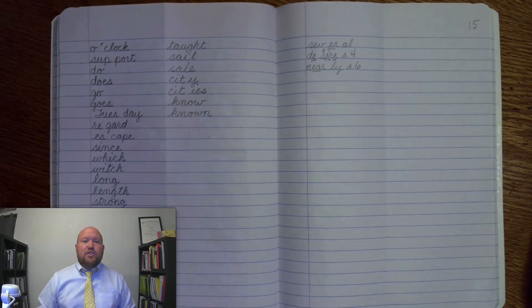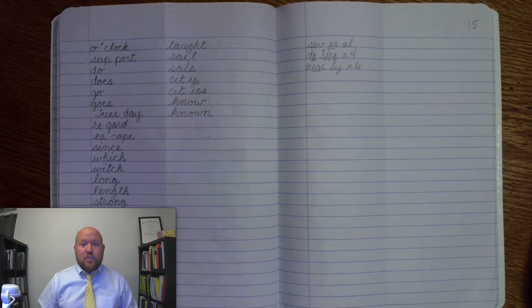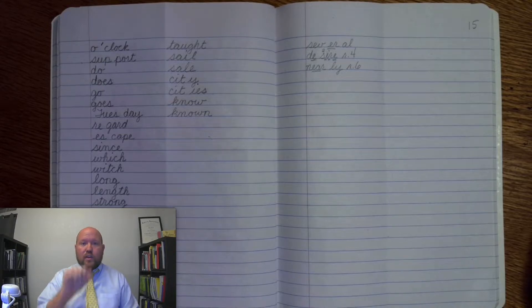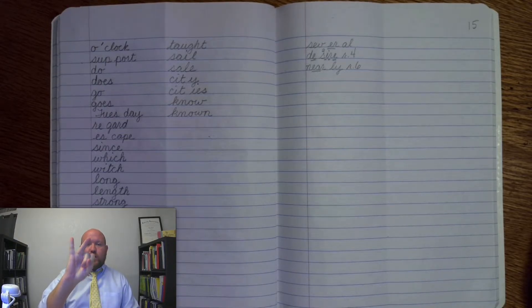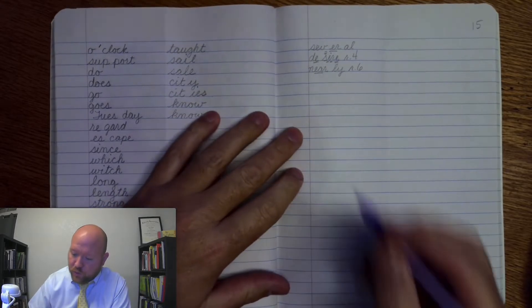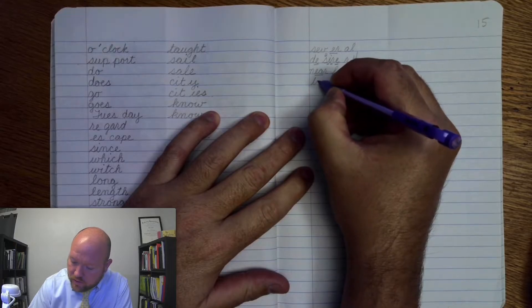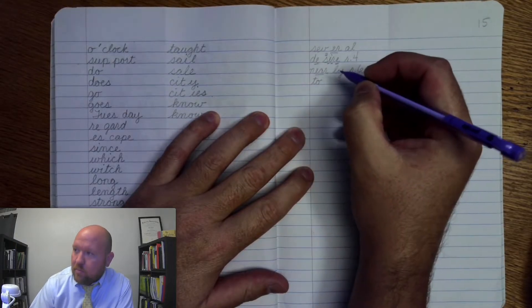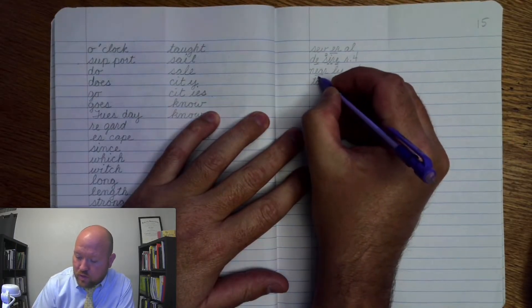The next word is to, like the preposition to, like I went to the store. To. Base word: to. T-o-o. We're using the o-o-u phonogram. To. Markings: T-o, once, o, three.